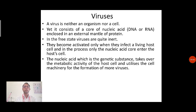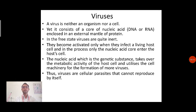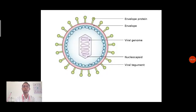The nucleic acid, which is the genetic substance, takes over the metabolic activity of the host cell and utilizes the cell machinery for the formation of more viruses. Viruses don't have particular functional structures of their own; they utilize the host's parameters to become active. Thus viruses are cellular parasites that cannot reproduce by themselves — they require a particular type of reproductive material. Here you can see the simple structure of a virus: there is an external envelope made of protein, then another envelope also made of protein, then a viral integument, and inside that the viral genome is present. The viral genome is made up of either DNA or RNA.